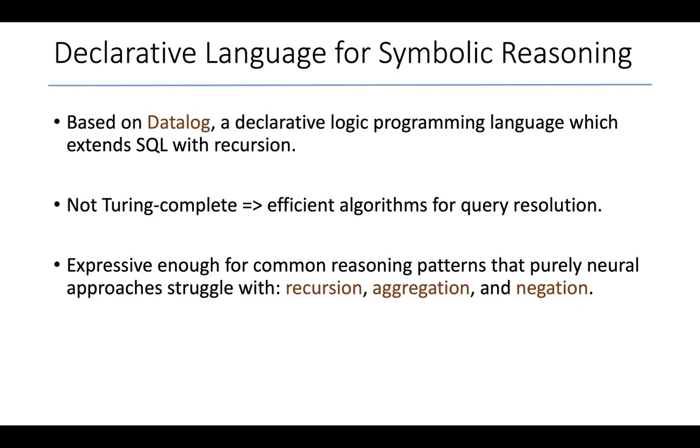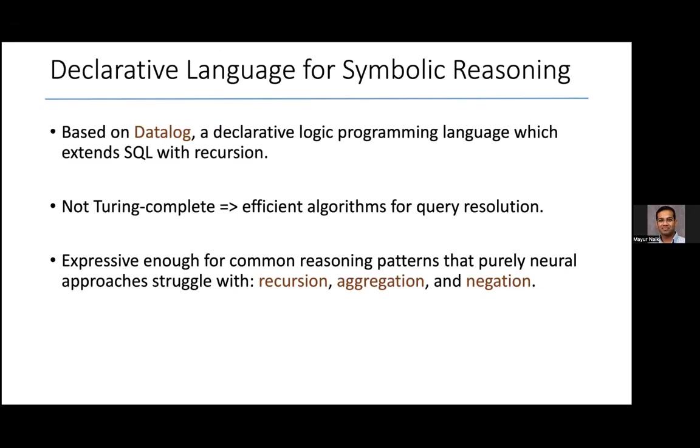And lastly, negation. We support that as well, which is yet another pattern that neural approaches typically struggle with.